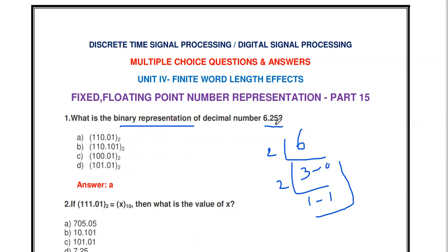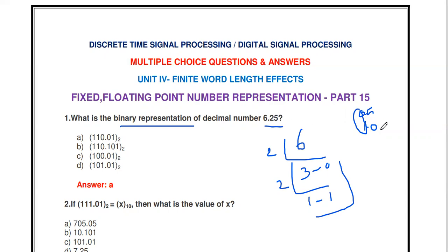For the fractional part 0.25, we multiply by 2: 0.25 × 2 = 0.5, then 0.5 × 2 = 1.0. We continue this process until the fractional part becomes zero. Writing the whole number parts in order gives us 01, so 0.25 in binary is 0.01.